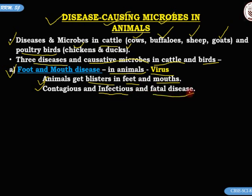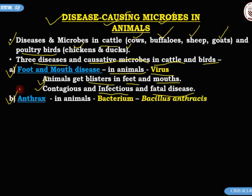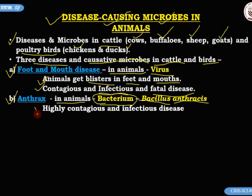The cattle die. The second disease is anthrax. Anthrax in animals is caused by a bacterium. The name of this bacterium is Bacillus anthracis — so it is easy to remember: anthrax is caused by a bacterium called Bacillus anthracis.